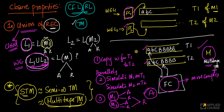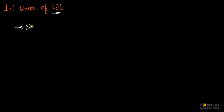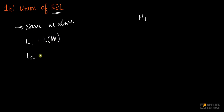Now let's look at the same thing for recursively enumerable languages. The flow stays the same as above. Suppose I have two recursively enumerable languages L1 and L2, with machines M1 and M2. Remember that for recursively enumerable languages, each machine can get into three states: accept, reject, or infinite loop.